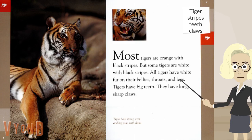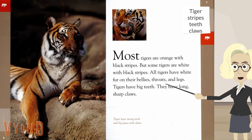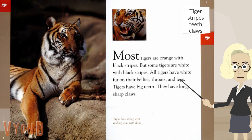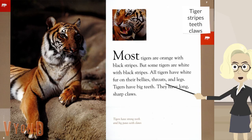Are these some of the words that you wrote down? Tiger, stripes, teeth, claws. Take a few minutes to talk about this page and make sure that you're using those keywords as you talk.